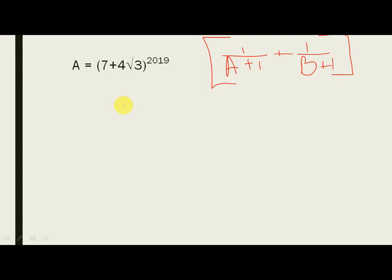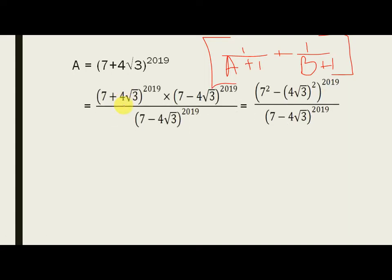Now, what I do is I multiply this number 7 plus 4 root 3 to the power 2019 to its rationalizing factor, which is 7 minus 4 root 3 to the power 2019. Now, the number that I have multiplied in the numerator, the same I have to multiply in the denominator also.